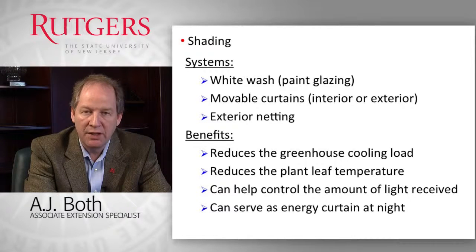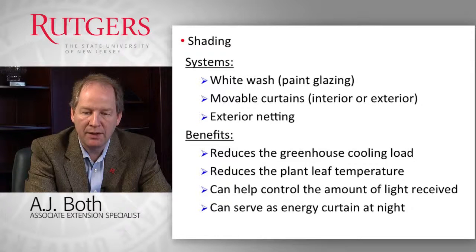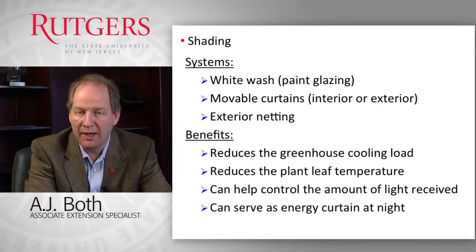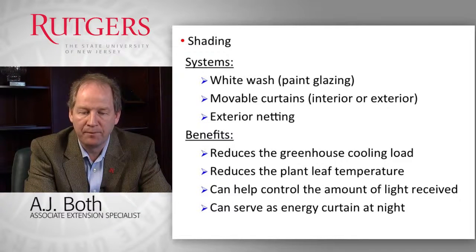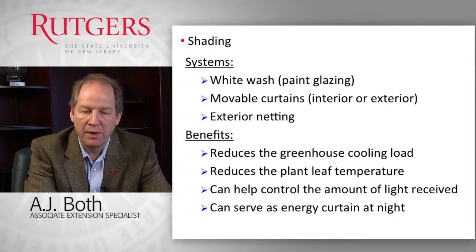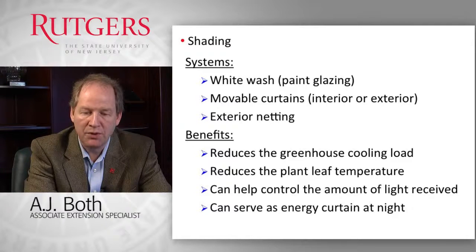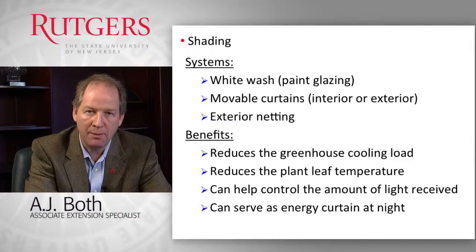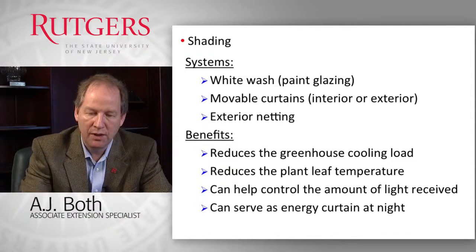The benefits of shading are that we reduce the amount of solar energy coming into the greenhouse, reduce plant leaf temperature, and reduce heat stress conditions on the plants. These shading systems can help control the amount of light that plants receive and thereby control the rate of growth. These shade systems often also have the capability to retain energy, which is very important in the evenings and during colder months of the year — so they typically serve a dual purpose of shading as well as energy conservation.